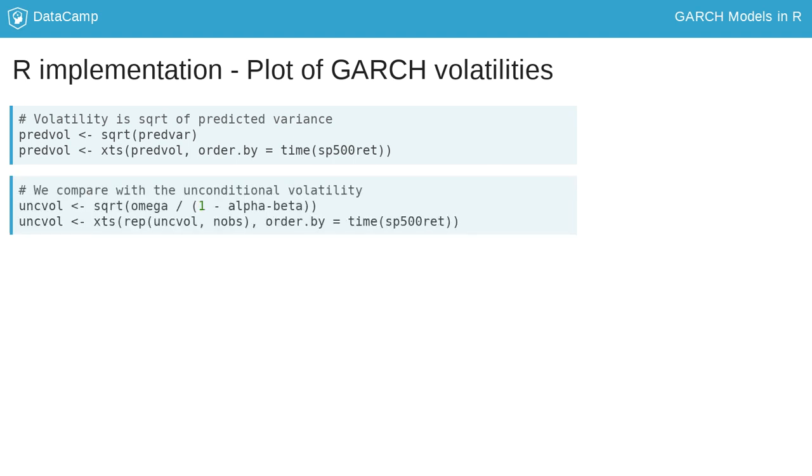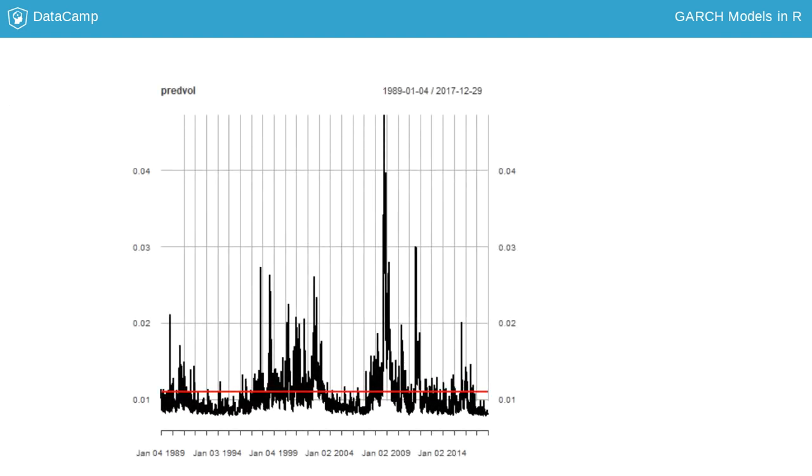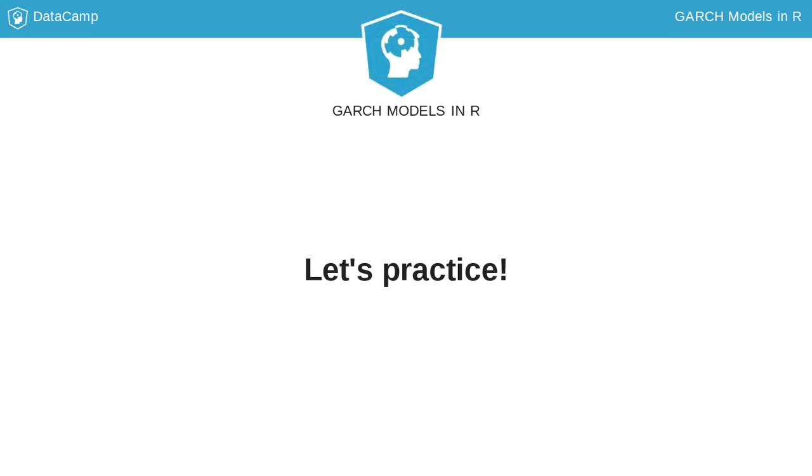The script ends with comparing the predicted and unconditional volatility in a time series plot. We can see that the volatility of the S&P 500 is mean reverting. Periods of above average volatility are followed by periods of below average volatility. Please go ahead and program your first GARCH model.